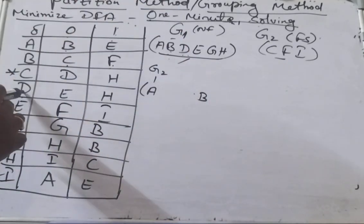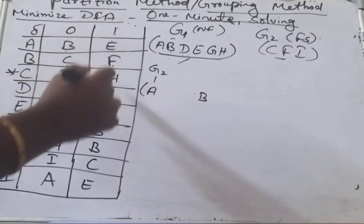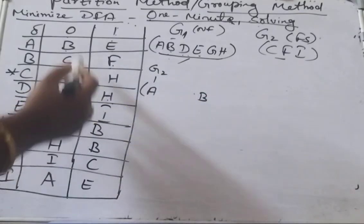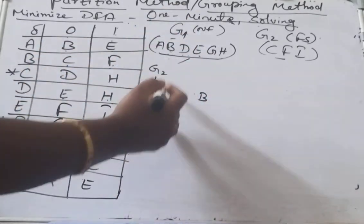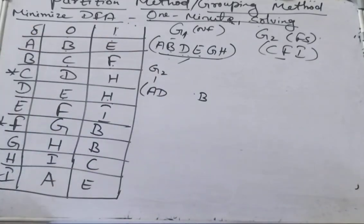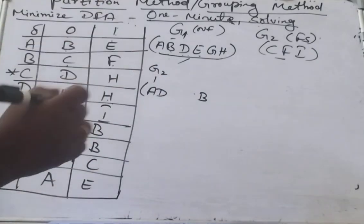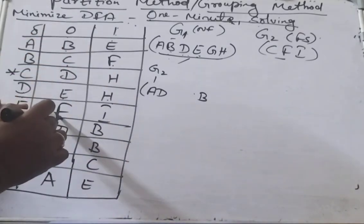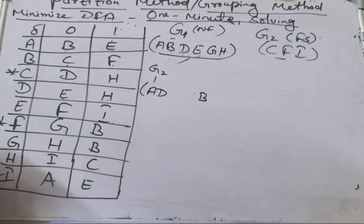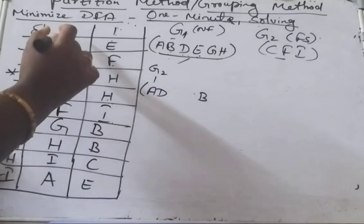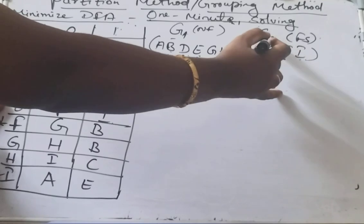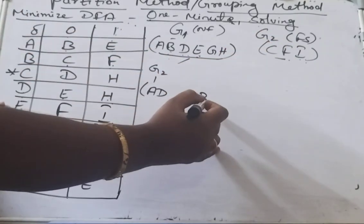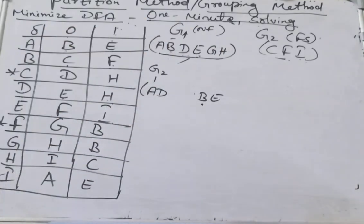Check D: on reading 0 it goes to E, on reading 1 it goes to H. E and H are both non-final states, so on reading 0 and 1 it goes to G1 — D falls under the same group as A. Next check E: on 0 it goes to F and on 1 it goes to I. F and I are in group G2, same as B. So E falls under the same group as B.